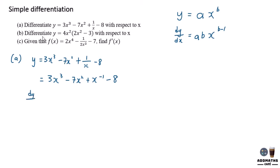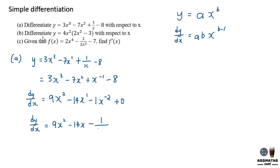When you're trying to differentiate this, first the power: differentiate 3x cubed — 3 times 3 gives 9x to the power of 3 minus 1, which is 9x squared. Then 2 times 7 gives 14x with power 1. Negative 1 times 1 gives negative x to the power of negative 2, since negative 1 minus 1. Minus 8 differentiates to 0. Change everything to original form: 9x squared minus 14x minus 1 over x squared. This is how you differentiate question A.